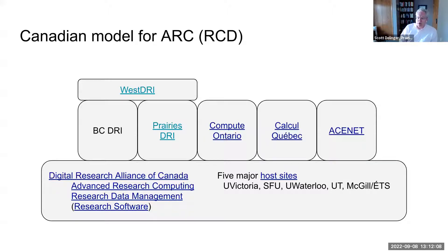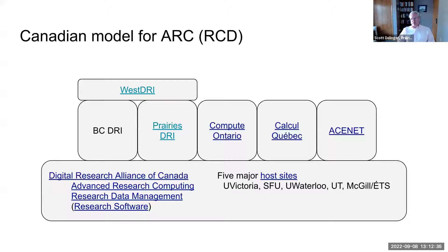On top of that are our regional organizations, which have changed recently. AceNet serves all of the Atlantic provinces, Calcul Québec serves Quebec, and Compute Ontario the same. Out west, we used to have West Grid, which in the past year has divided into two organizations: the BC Digital Research Infrastructure Organization and Prairies DRI. Operationally, we try to remain a broad cooperation in servicing researchers, and we refer to that as West DRI.